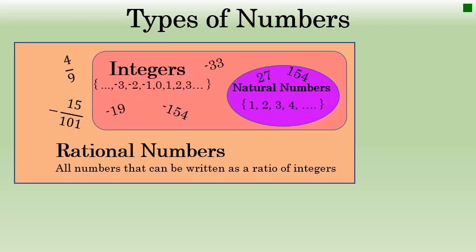Decimals that terminate are also rational numbers. 3.75 is a rational number. This could be expressed as a fraction, 375 over 100. Additionally, all repeating decimals are rational numbers. 0.3 repeating is a rational number. As a fraction, this would be one-third.